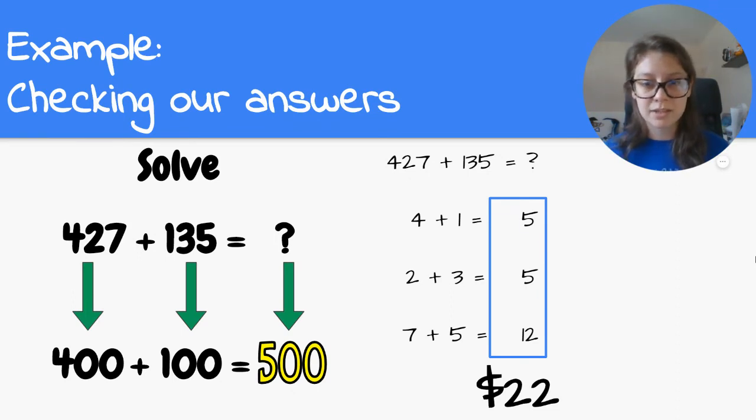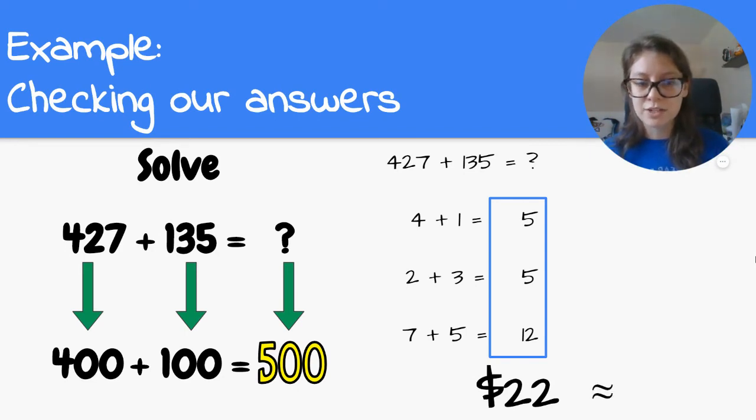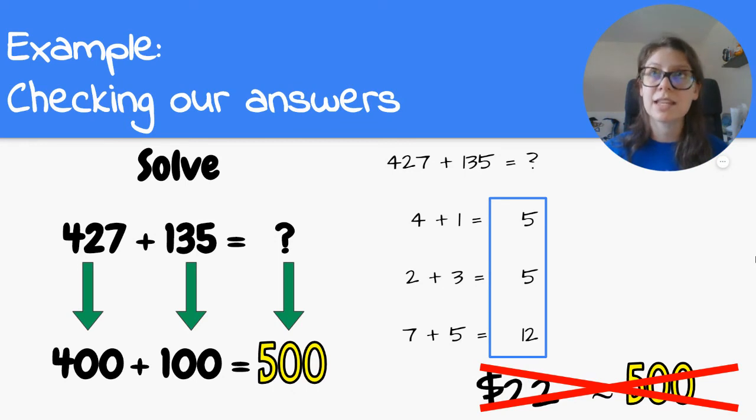Wait, but my reasonable answer, my reasonable estimate was 500. And 22 is not about 500. They're very different numbers. So I need to go back and look. And man, I made the same mistake. I wrote 4 instead of 400 and 1 instead of 100. And then in the tens, I wrote 2 instead of 20 and 3 instead of 30. So because I found a reasonable estimate for what my answer should be, I was able to recognize that I made a mistake. And so I just need to go back and fix it.